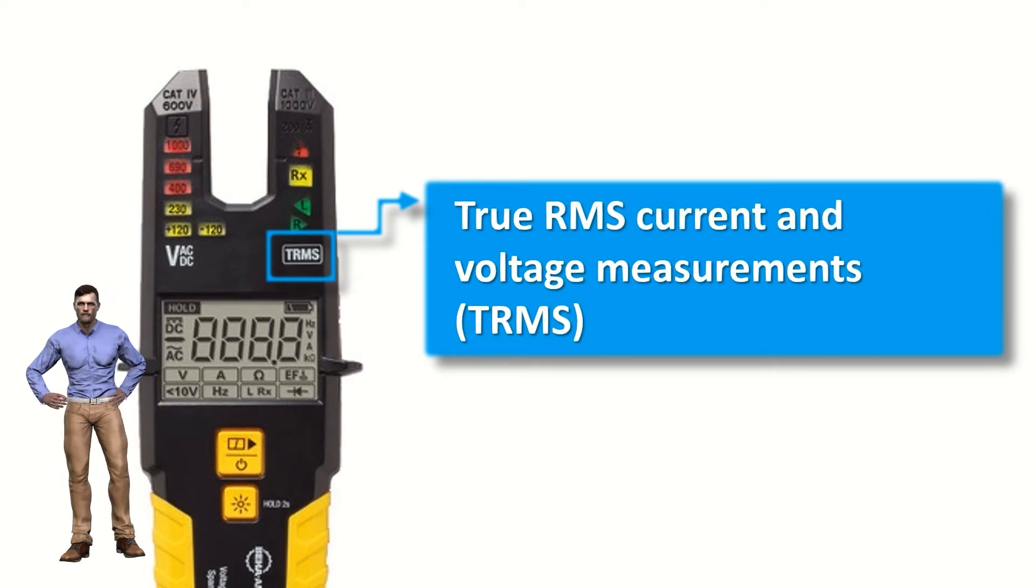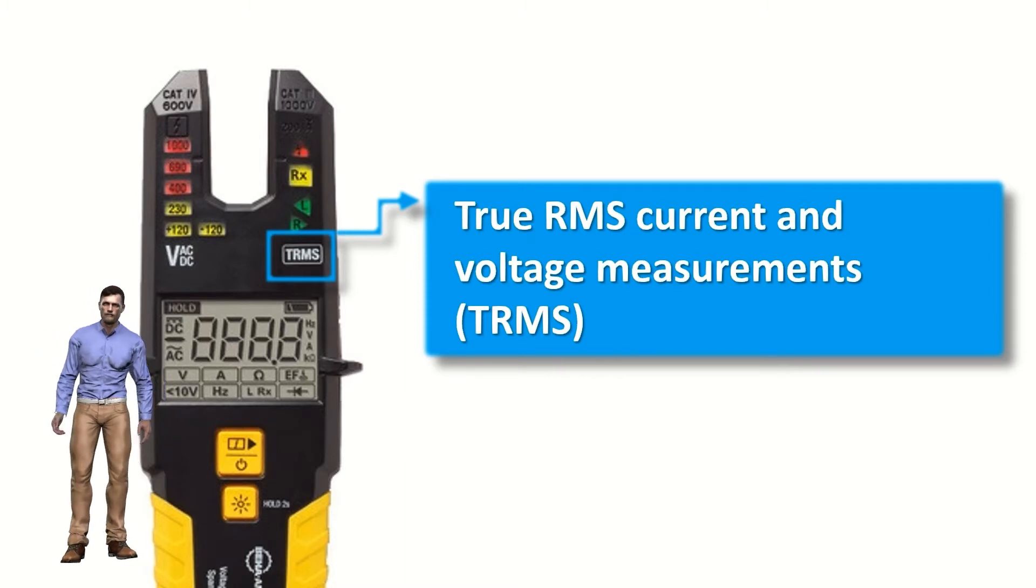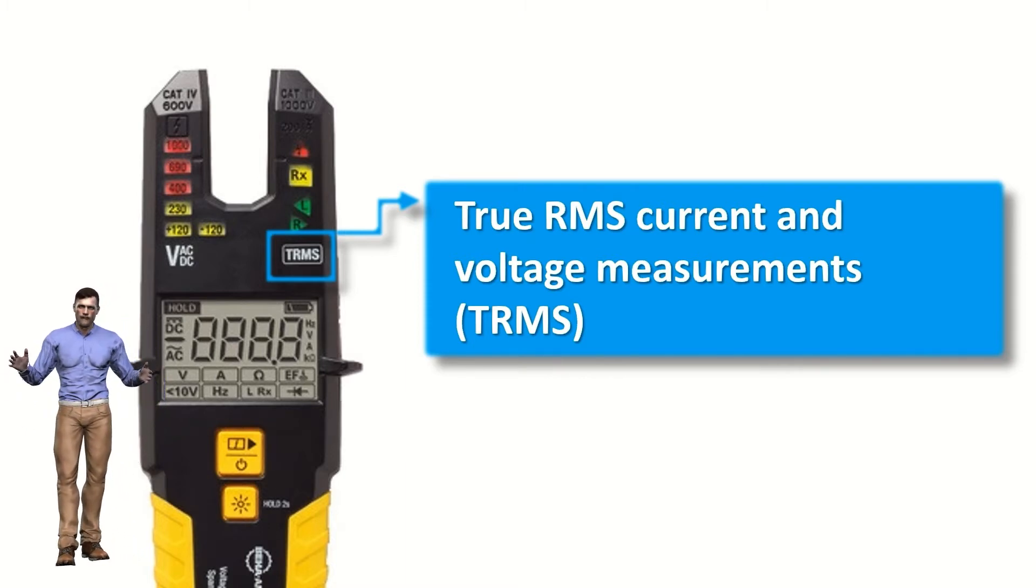Both the voltage and current measurements are of true effective value, which is extremely important for an accurate measurement without error when there are harmonics in the installation, which nowadays is quite common in electrical networks.